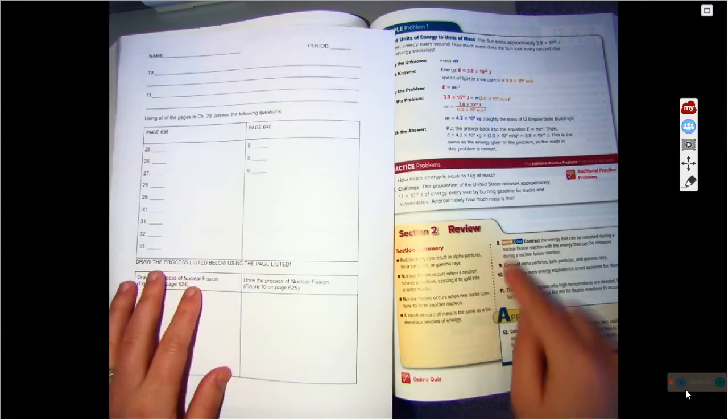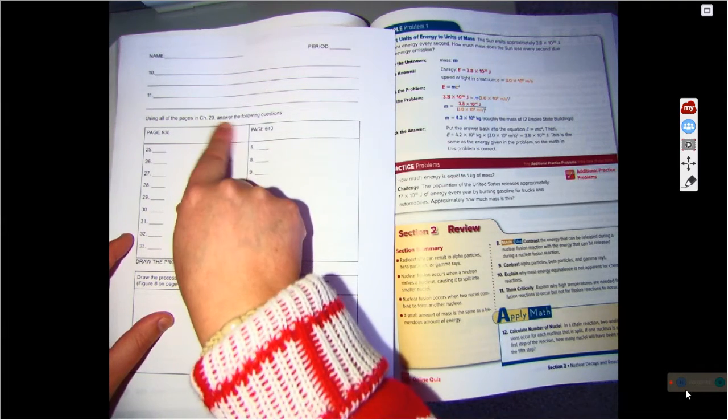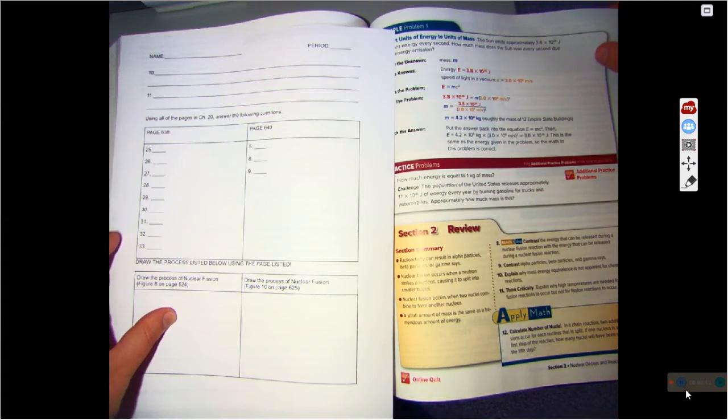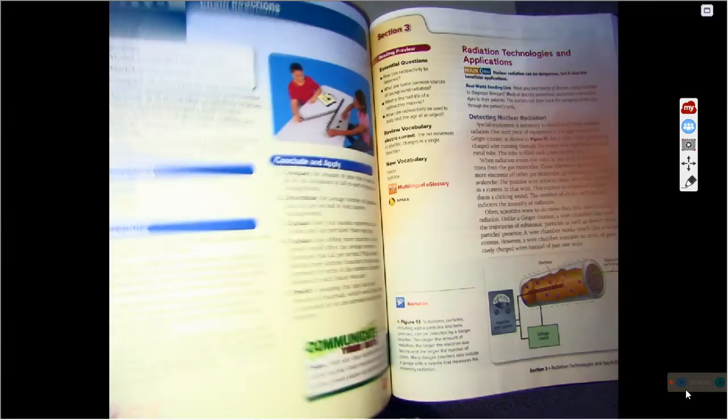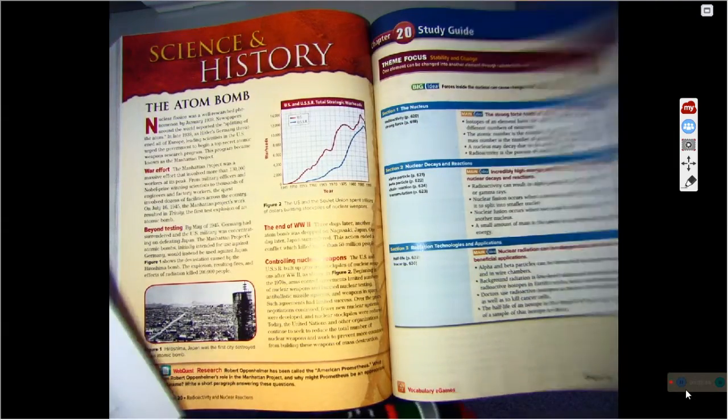So 9, 10, and 11. All right? Then it says use all of chapter 20 to answer the following questions. So I'm going to go to page 638. We're going to go to 638. It's going to be right here.